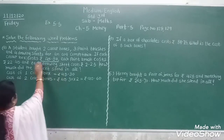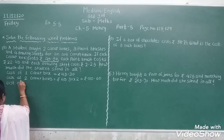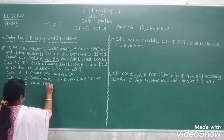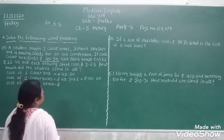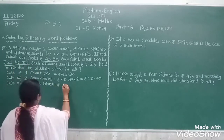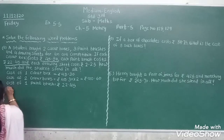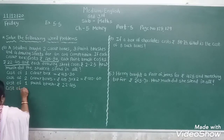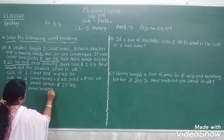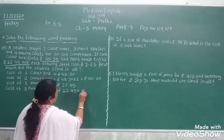Next, we find the cost of three paint brushes. Cost of one paint brush: Rs. 22.45 paise. Below that, we write the cost of three paint brushes: Rs. 22.45 paise multiplied by 3.